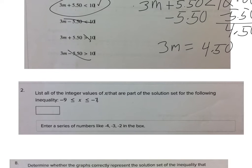Second problem, a little bit different. List all of the integer values of x that are part of the solution set for the following inequality: negative 9 is less than or equal to x, which is less than or equal to negative 7. I like to think of a number line for this one because it's not too many that we're going to have to list.